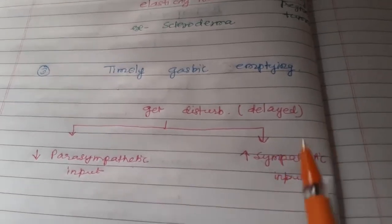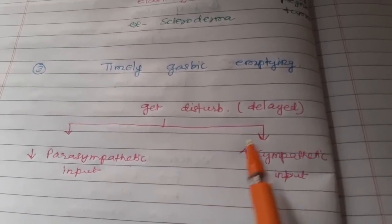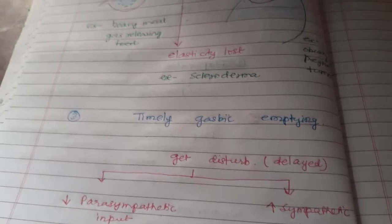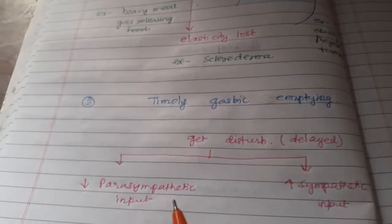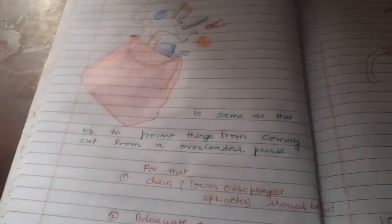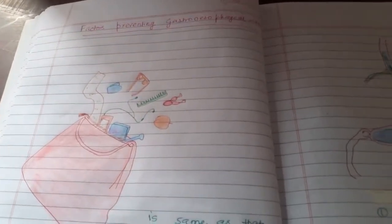If input increases, that will lead to delayed gastric emptying. So these are the factors that prevent gastroesophageal reflux. Thank you.